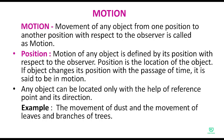Motion of any object is defined by its position with respect to the observer. Kisi bhi object ka agar motion ki baat karo toh usse hum define karenge uski position se, observer ke respect mein. Agar uski position change hui hai — pehle woh kisi doosri position pe tha, phir usne apni position change kar li — tab hum keh sakte hain ke haan, motion hua. Position is the location of the object.